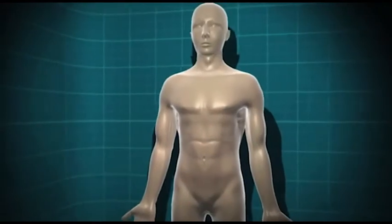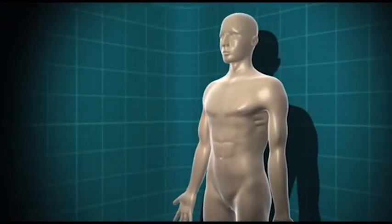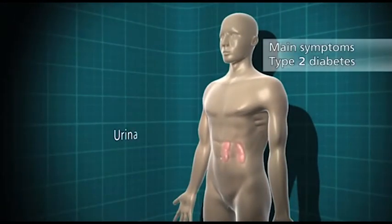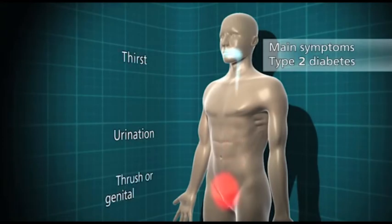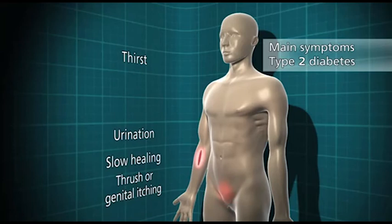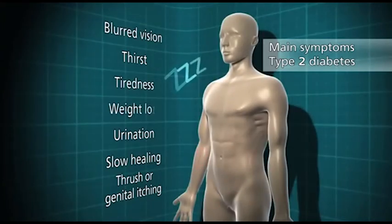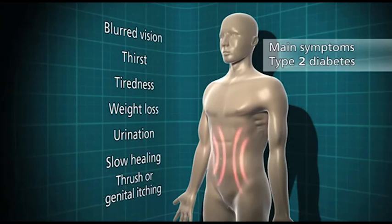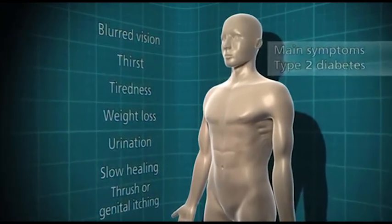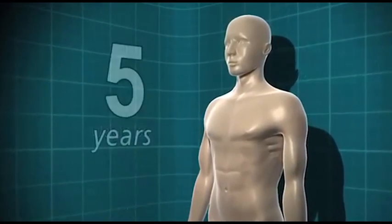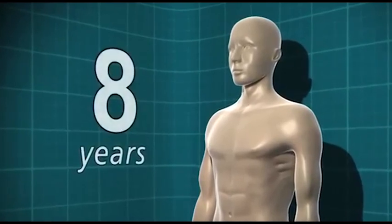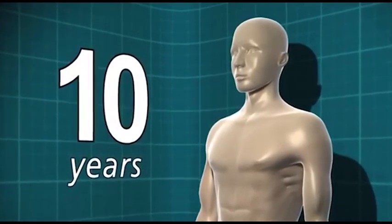As with type 1 diabetes, the symptoms of type 2 diabetes are going to the toilet a lot, thirst, thrush or genital itching, slow healing of wounds, blurred vision, and tiredness and weight loss in some people. However, the symptoms for type 2 come along very slowly, and some people don't have any symptoms at all. For that reason, people can live with type 2 diabetes for up to 10 years before they realise that they have it.